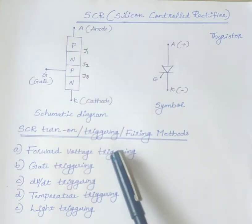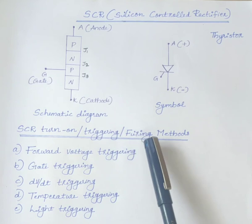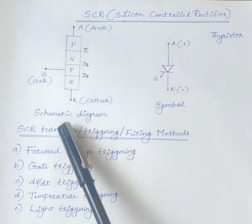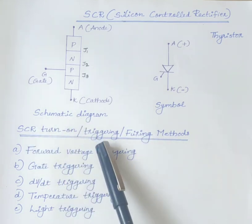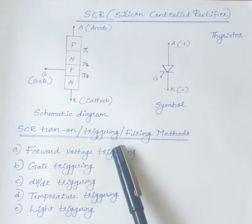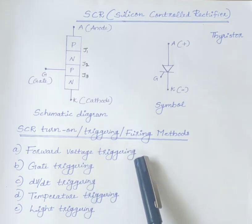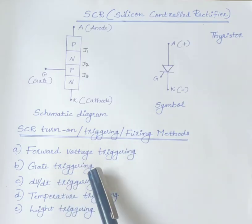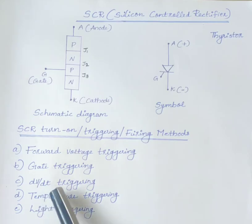Next, we will discuss the turn-on methods of SCR. Turn-on is also known as triggering or firing methods of SCR. The commonly used turn-on methods are forward voltage triggering, gate triggering, dV by dt triggering, temperature triggering and light triggering.